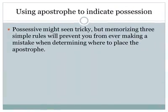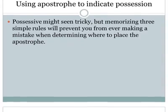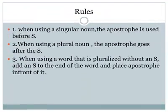Using an apostrophe to indicate possession: possessives might seem tricky, but memorizing three simple rules will prevent you from ever making a mistake when determining where to place the apostrophe. These are the rules. Number one: when using a singular noun, the apostrophe is used before s. Number two: when using a plural noun, the apostrophe goes after the s.